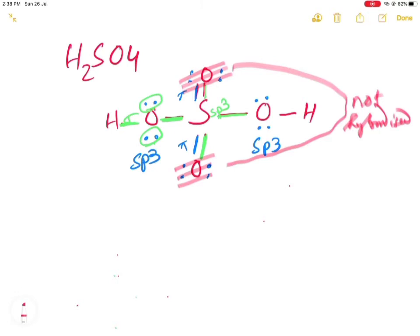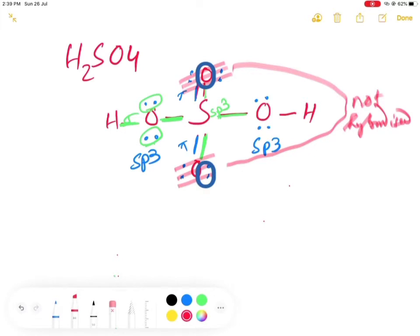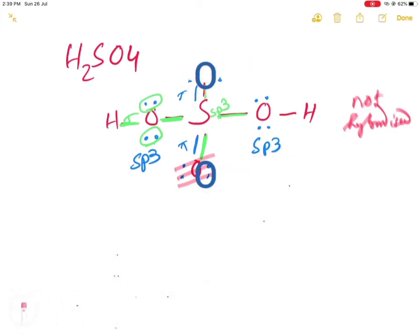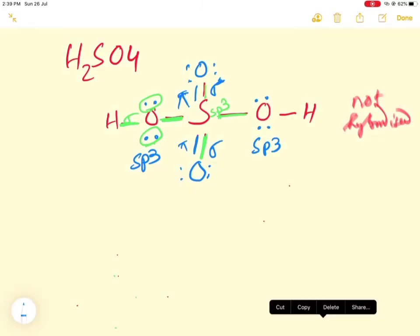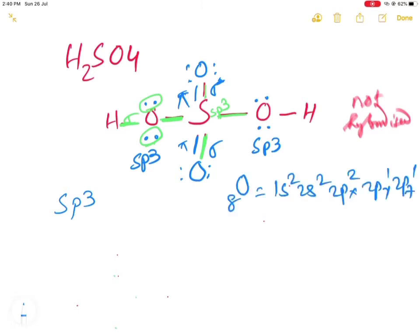Let us see how these two terminal oxygen atoms form bonds with sulfur. There are two bonds: one is a sigma bond and another is a pi bond. The pi bonds are not due to hybridization. You know sulfur is sp3 hybridized, and this oxygen has the configuration 2s², 2px², 2py¹, 2pz¹ — it has two half-filled orbitals.